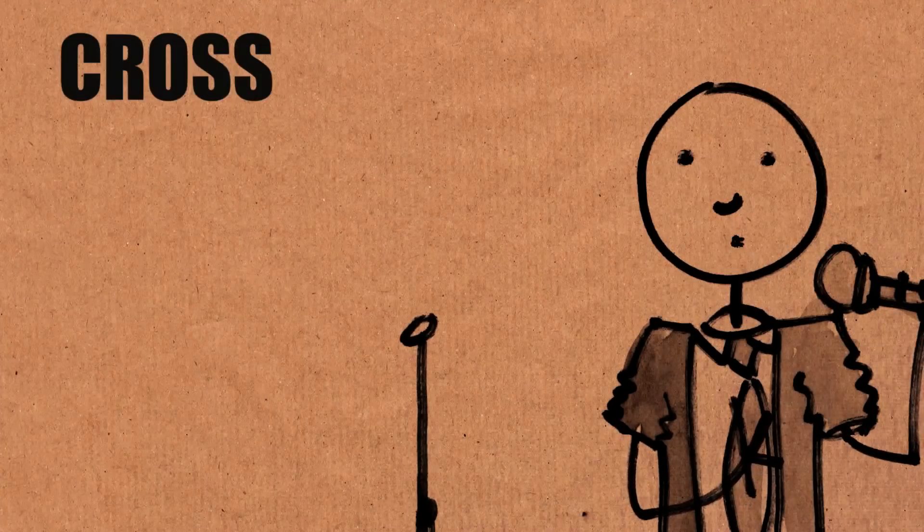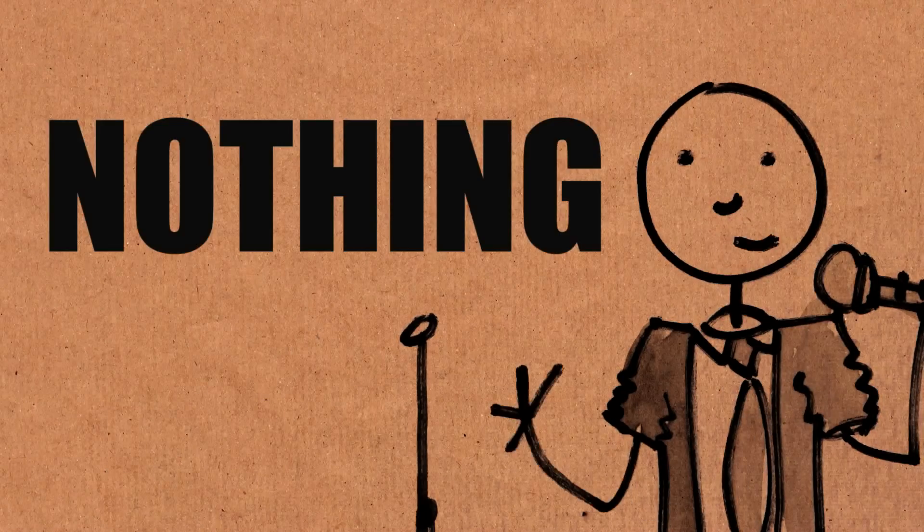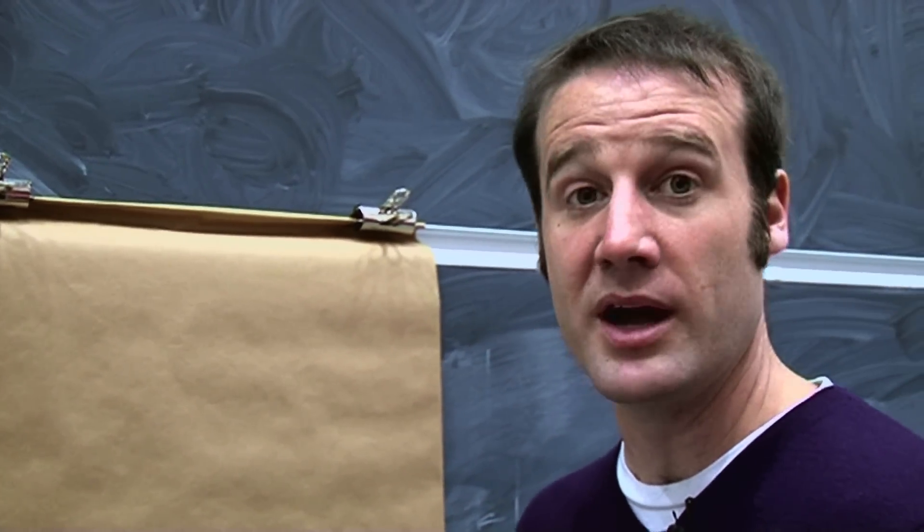What do you get if you cross a mosquito with a mountain climber? Nothing! You can't cross a vector in a scalar! Okay, there's a lot going on here. We'll start with what we mean by cross.